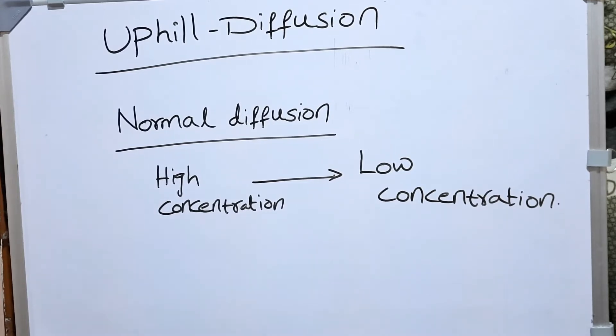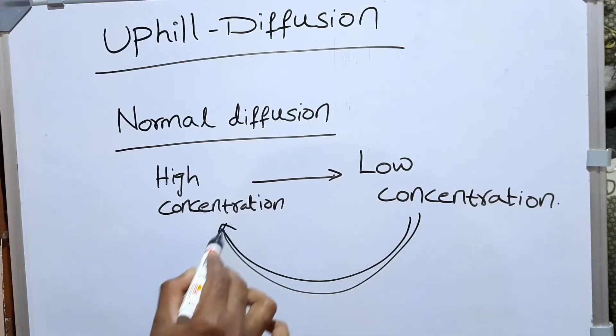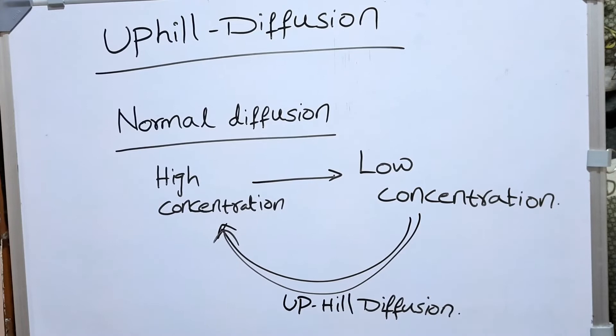But if the diffusion is the other way around, if an element is diffusing from lower concentration to a higher concentration, then we call it uphill diffusion, because here the element is diffusing against the concentration gradient.